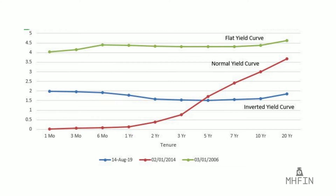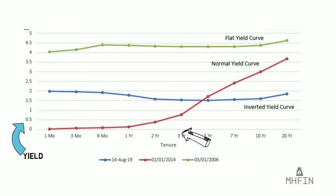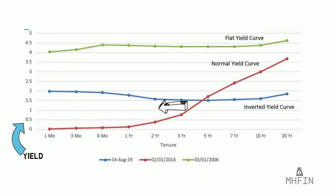If we take a look at this graph, on the left-hand side along the y-axis is the yield, and on the bottom you have the maturity. This is how a normal yield curve should look — facing upwards, more yield with more maturity. An inverted yield curve looks more like this, facing downwards, with more yield for less maturity and less yield for more maturity.